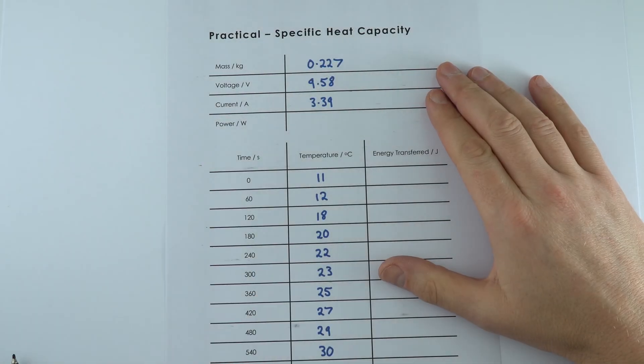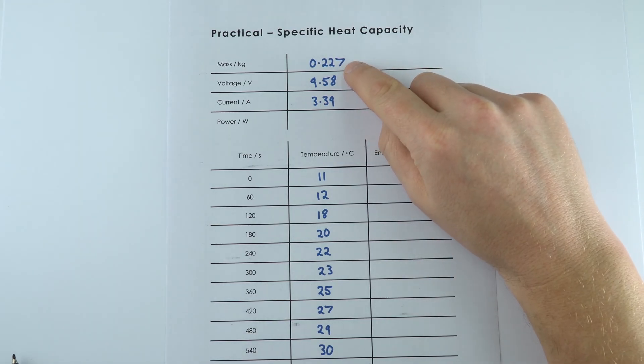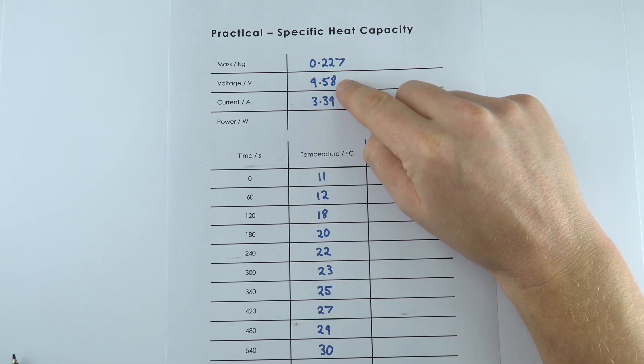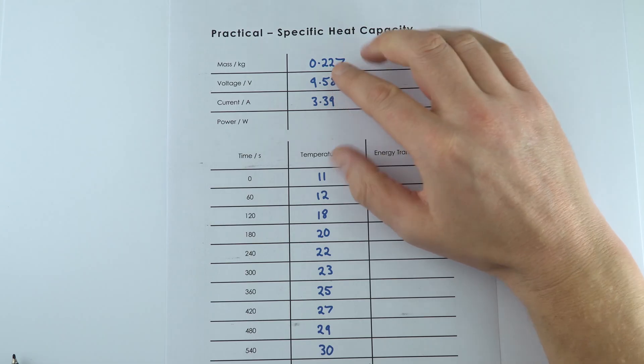So these are the results that we took for the water that was being heated. We had a mass of 0.227 kilograms. We had these values for the voltage and current. Now they did fluctuate slightly, but these are the values that I chose when I looked at the data.